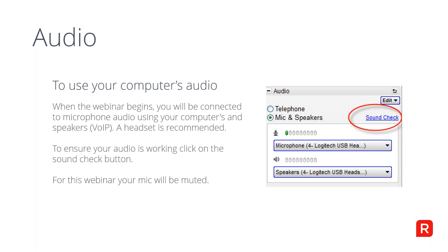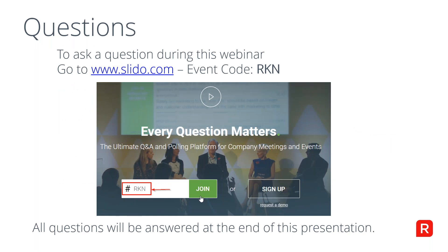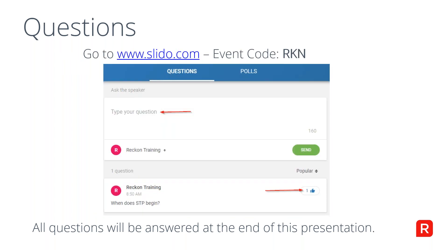Your microphones have been muted. If you need to ask a question, please go to slido.com and enter in the event code RKN — we'll answer all questions at the end. You can type in your question and hit send. If another attendee has asked the same question, you can hit the like or voting button so we're not repeating the same questions.